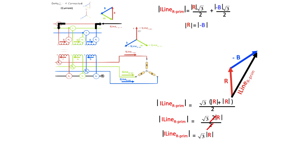You can say it in general terms also: the current flowing in the line — depending on which phase you're talking about — is equal to root 3 times the current flowing in the winding of the associated transformer leg. I call that I subscript line-to-line, so we know we're talking about the primary side.